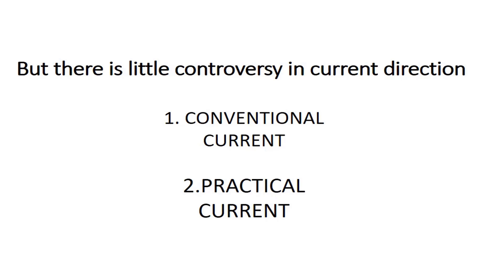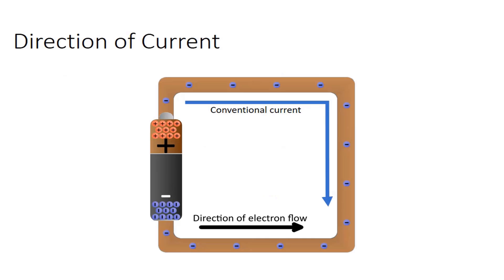Before the invention of electrons, it was assumed that the current direction is from higher potential to lower potential, that is from positive to negative. But after the invention of electrons, it was found that